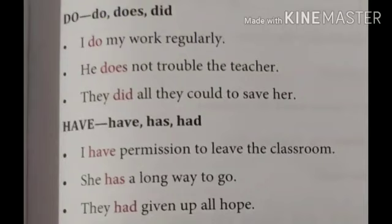Now look at these sentences. I do my work regularly. It does not trouble the teacher. They did all they could to save her. Now have, has, and had: I have permission to leave the classroom. She has a long way to go. They had given up all hope. In these sentences we saw how to use do, does, did, and have, has, had.